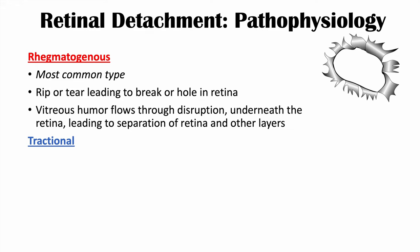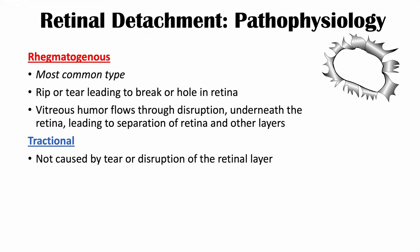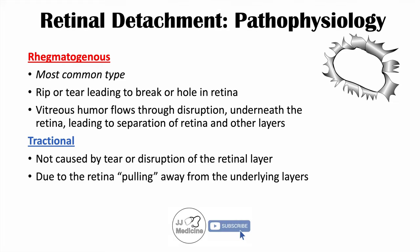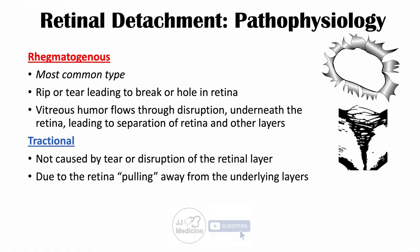The second type is tractional. Tractional retinal detachment is not caused by a tear or disruption of the retinal layer. Instead, the retina is pulled away from the underlying layers — sometimes a structure within the vitreous humor sticks to the retina and essentially pulls it away.